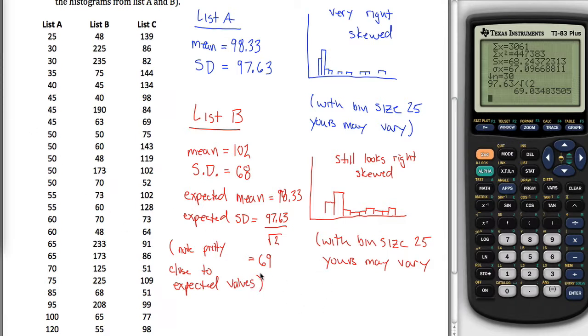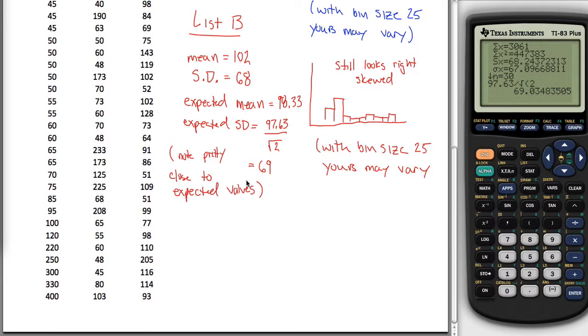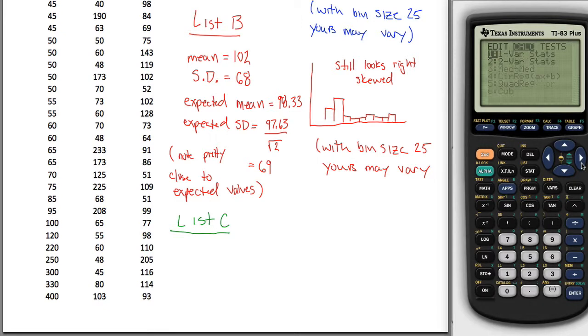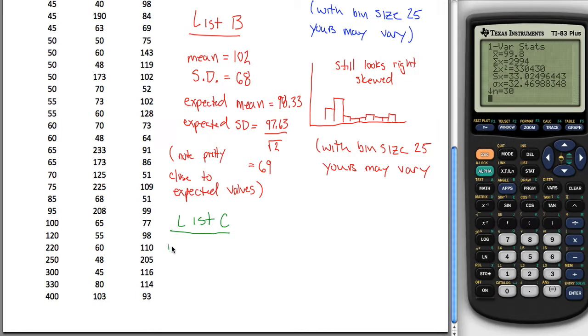And then finally, we'll repeat this one more time with List C, kind of going through those same steps. So first, we're going to calculate the mean and the standard deviation, one variable statistics, but I want to use L3 now, and we get that our mean is equal to 99.8, and our standard deviation is equal to 33.